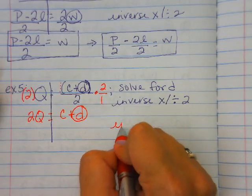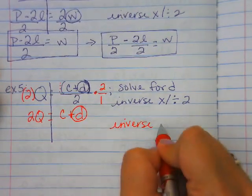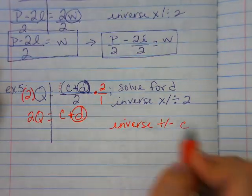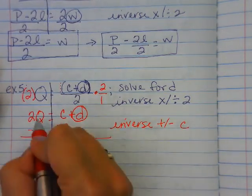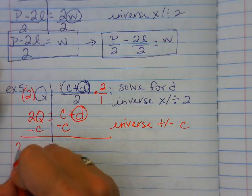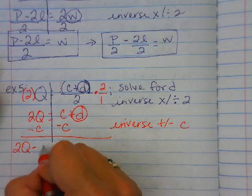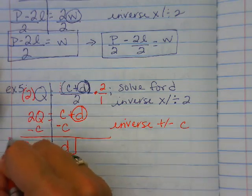So now I can do my inverse add subtract on my c to get d by itself. So minus c, minus c. Again, these are not like terms. So you're going to have to say 2Q minus c, order matters on that, is equal to d.